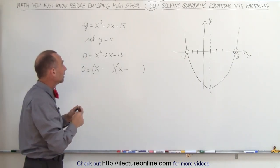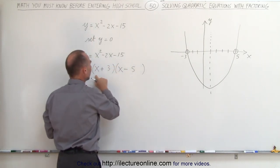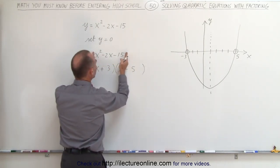If I make the larger one negative, I get -5 and +3, and this is the factored form of this particular trinomial.